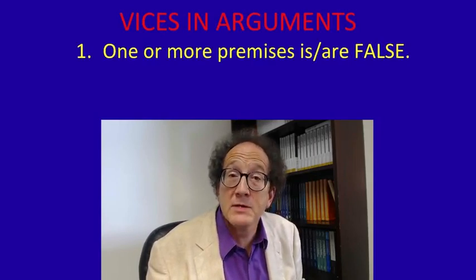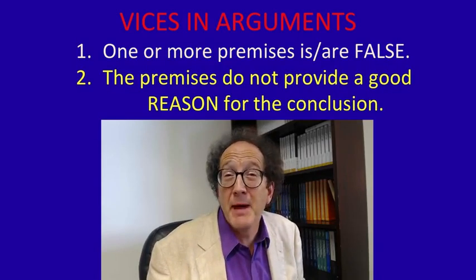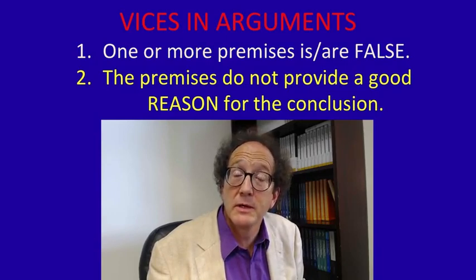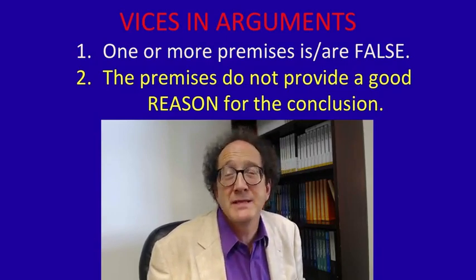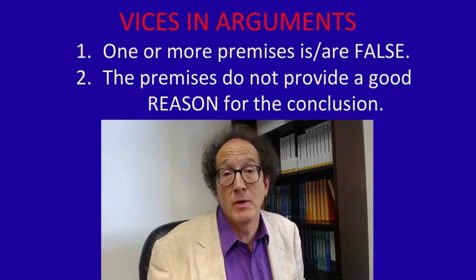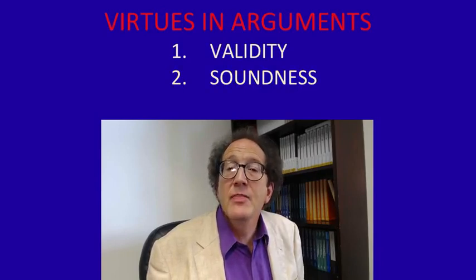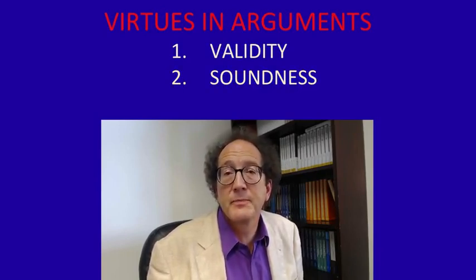Because an argument consists of premises and a conclusion, and the premises are supposed to be related in the right way to the conclusion, there can be two main ways for an argument to go wrong — two main vices of argument. The first is there might be something wrong with the premises; in particular, they might be false. Second, there might be something bad about the relation between the premises and the conclusion — the premises might fail to give a good reason for the conclusion. When we avoid these problems, we get the corresponding virtues: validity and soundness.